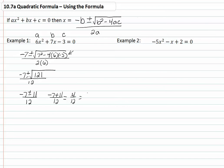Then we have (-7 - 11) / 12, which gives us -18/12, which reduces to -3/2. Therefore, our solution for example 1 is x = -3/2 and 1/3.